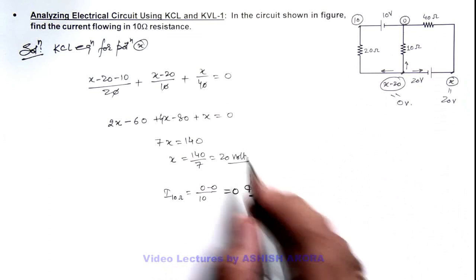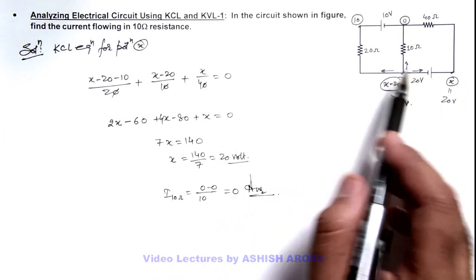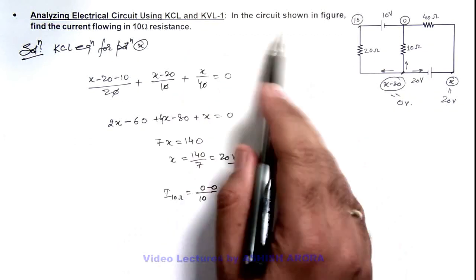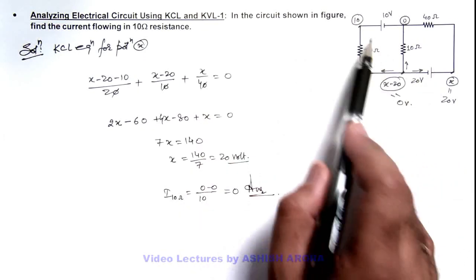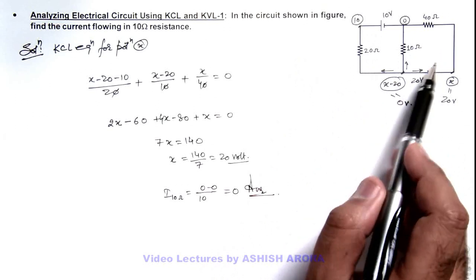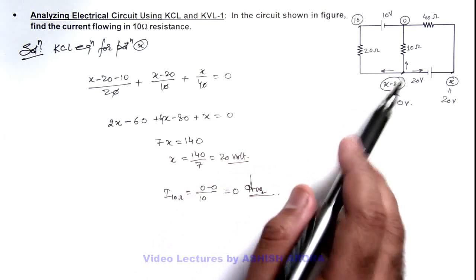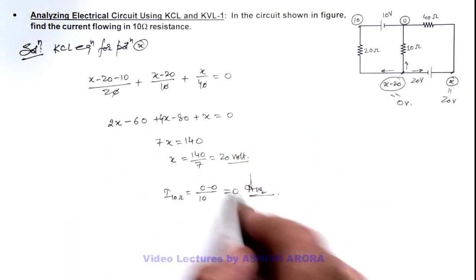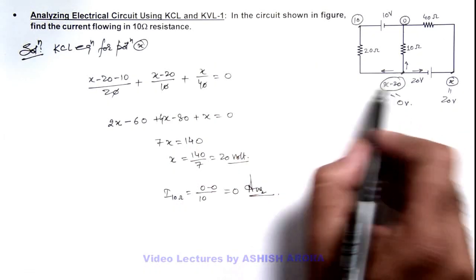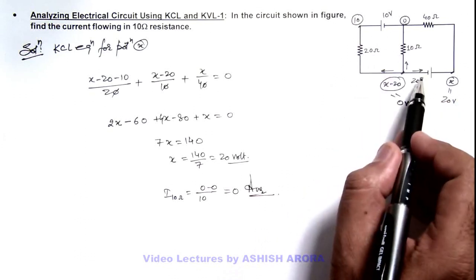To simplify this problem, you can also make use of Kirchhoff's voltage law, in which you can distribute currents in the circuit and write KVL equation. But still, this method of Kirchhoff's current law is much easier because by using a single variable x we are getting the result. If we use Kirchhoff's voltage law there will be two variables in the two loops.